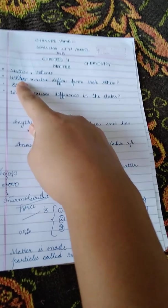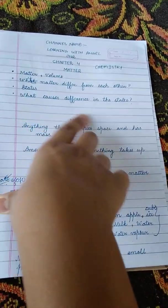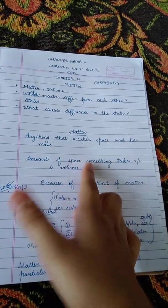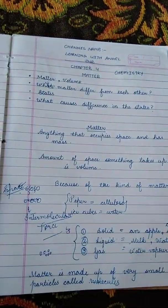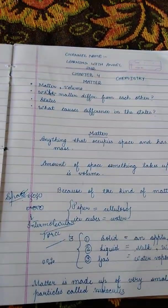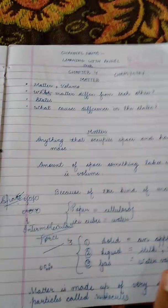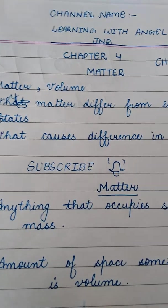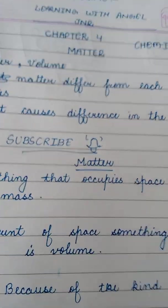I hope these four points are clear to you: first was matter and volume, then why matter differs from each other, then states of matter, and what causes the difference in states. If you like my video, please click the like button, subscribe to my channel, and hit the bell icon. Thank you everybody!